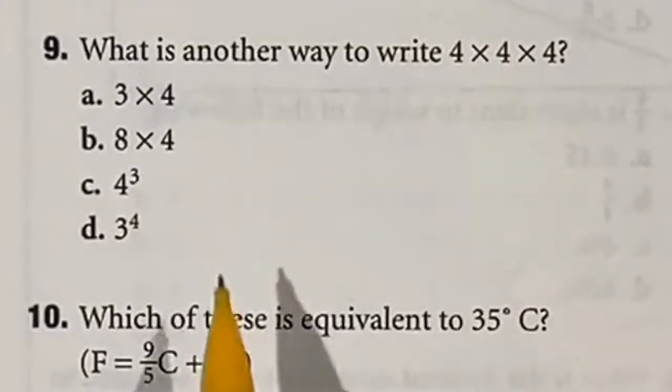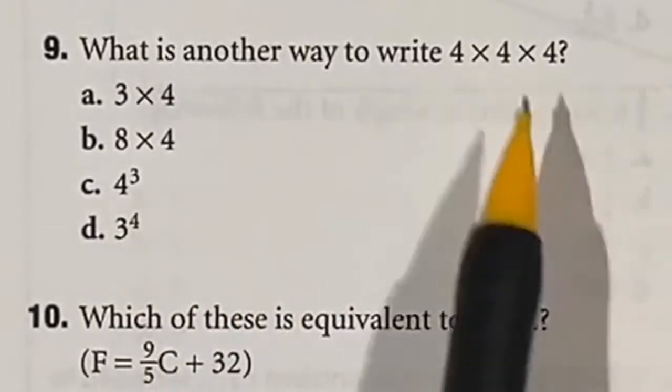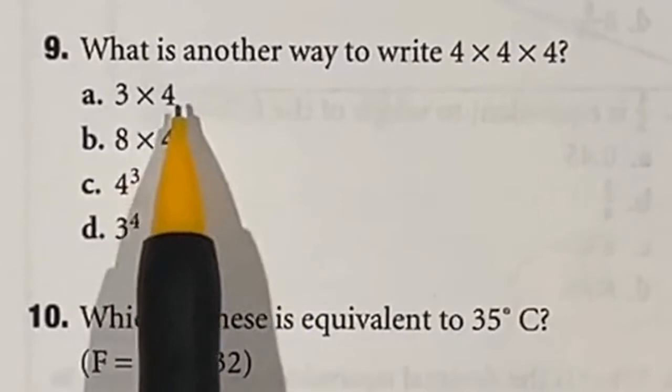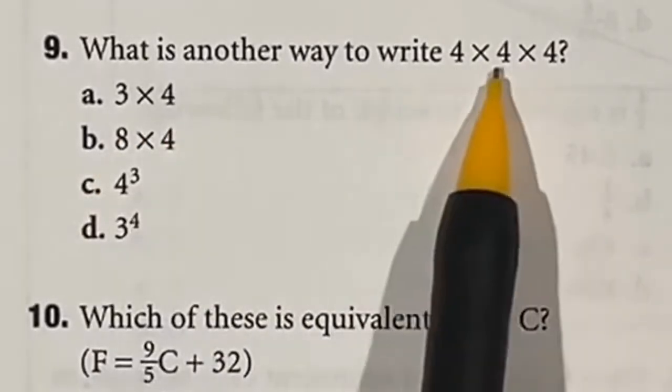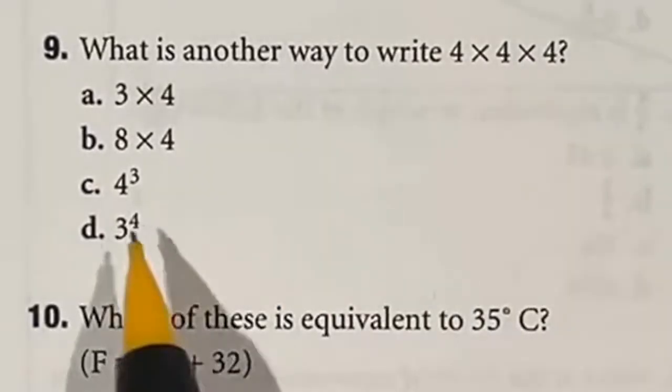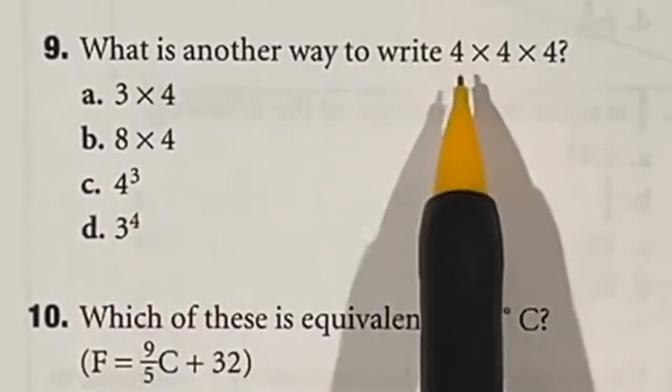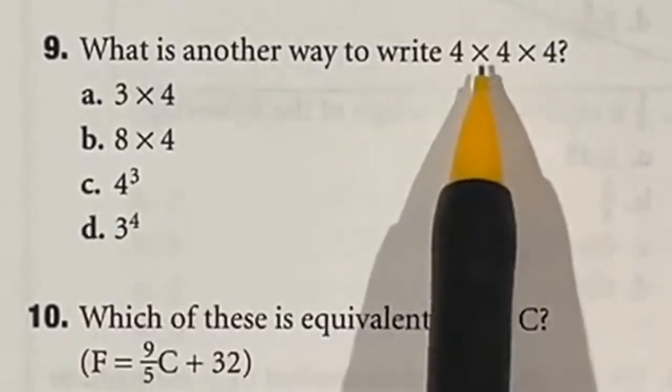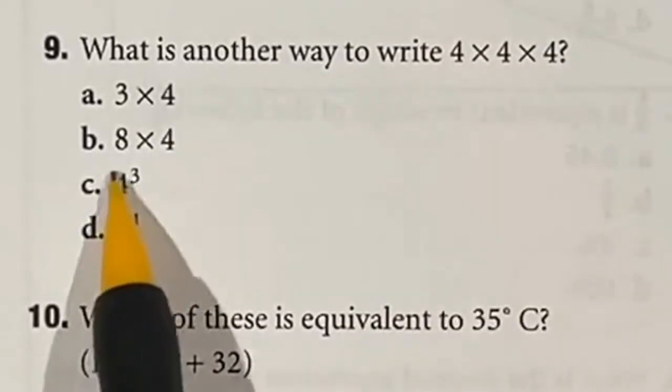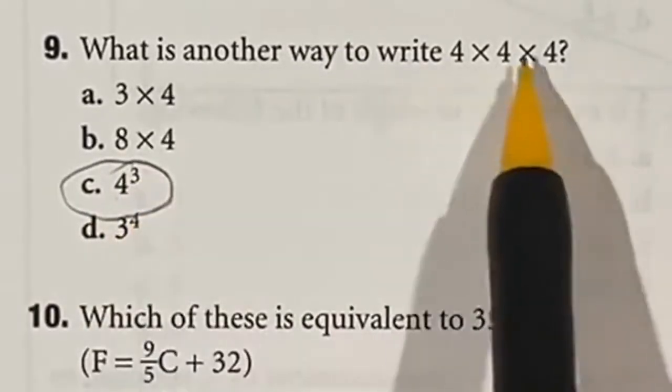So number nine is checking to see if you understand exponents and how they work. In this case, it has four times four times four. This is not the same thing as four times three, because that's just 12 and four times four is already 16, making it much higher than 12. So let's look at these other options here. This is an exponent, but which of the two it is? Well, in this case we have four three times, so that is how an exponent works. So this answer is C, four raised to the third power, because there's three of them.